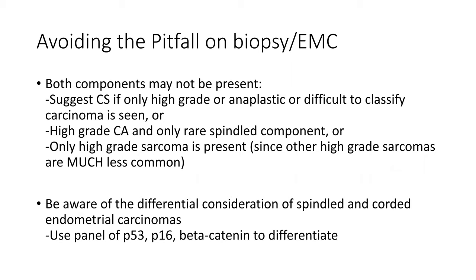The other consideration, such as in this circumstance, is to be aware of the differential consideration of this spindled and corded-type endometrial carcinoma. In that setting, considering doing a panel of p53 and p16, which would be expected to be strongly positive in carcinosarcoma, and beta-catenin, which is negative in carcinosarcoma but should be positive in endometrioid carcinomas, may help to differentiate these two.